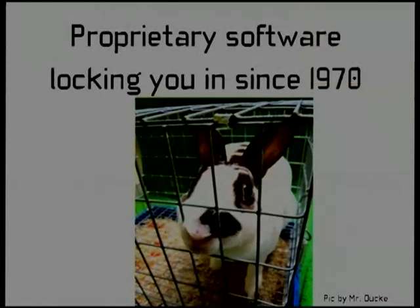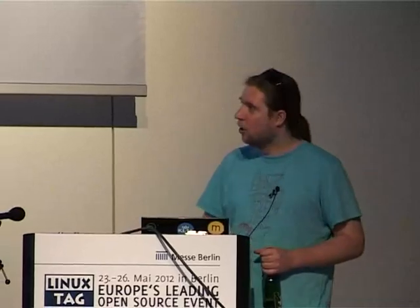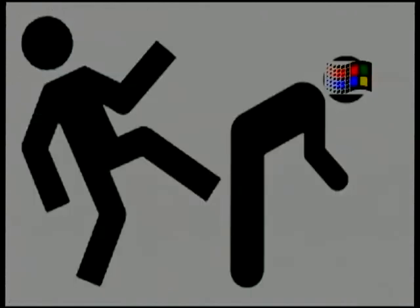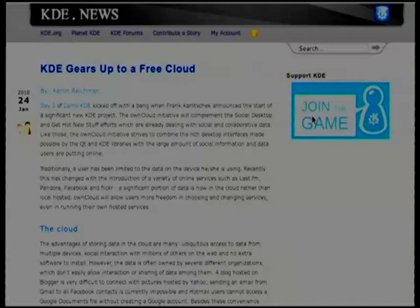This is a very typical problem. Big companies like to lock down your data somewhere and then later on tell you, hey, if you don't upgrade to the new version, you can't open these files anymore. That kind of stuff has been happening for quite a while already. Of course, in the meantime, there's this big bunch of geeks out there. A lot of them are here, and we've always had this tendency to try and kick the asses of the big guys and do something about the fact that they're trying to eat our data. And that is, of course, what OwnCloud is all about.